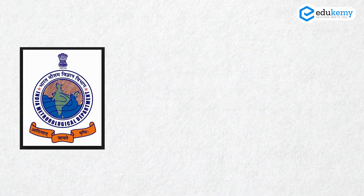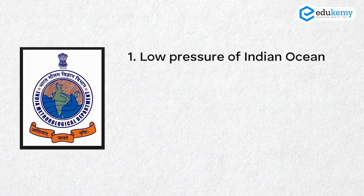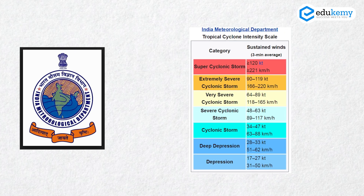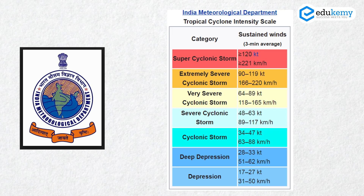But in India, IMD classifies cyclones a bit differently. IMD uses two systems of classification. One is for the low pressures of the Indian Ocean, and the second is a classification of super cyclones. There are six types: low pressure, depression, deep depression, cyclonic storm, severe cyclonic storm, and super cyclone. The deep depression is up to a wind speed of 61 km/h, and it becomes a cyclonic storm only when winds cross 61 km/h. Super cyclone occurs when wind speeds are more than 220-221 km/h.